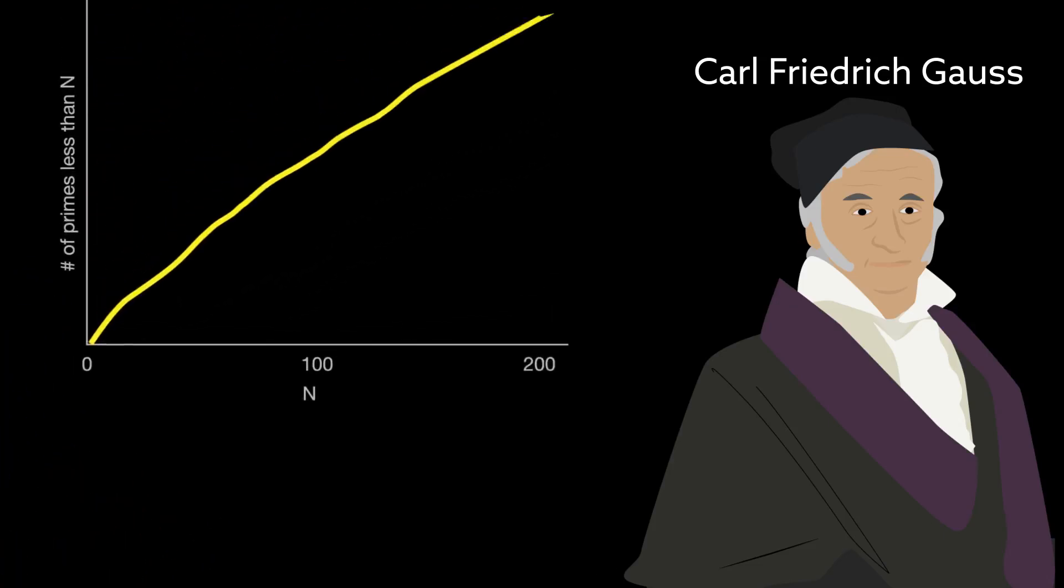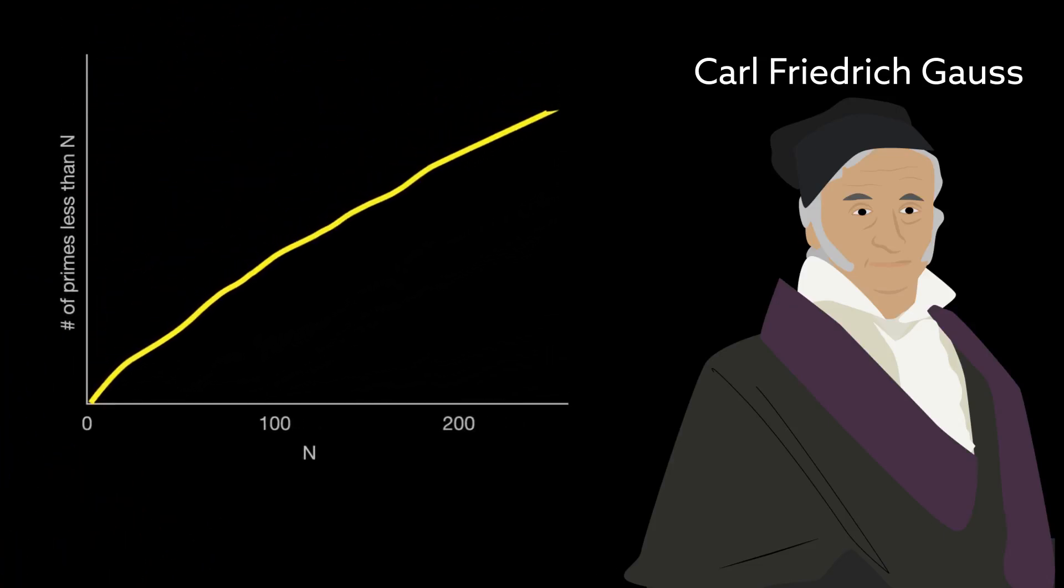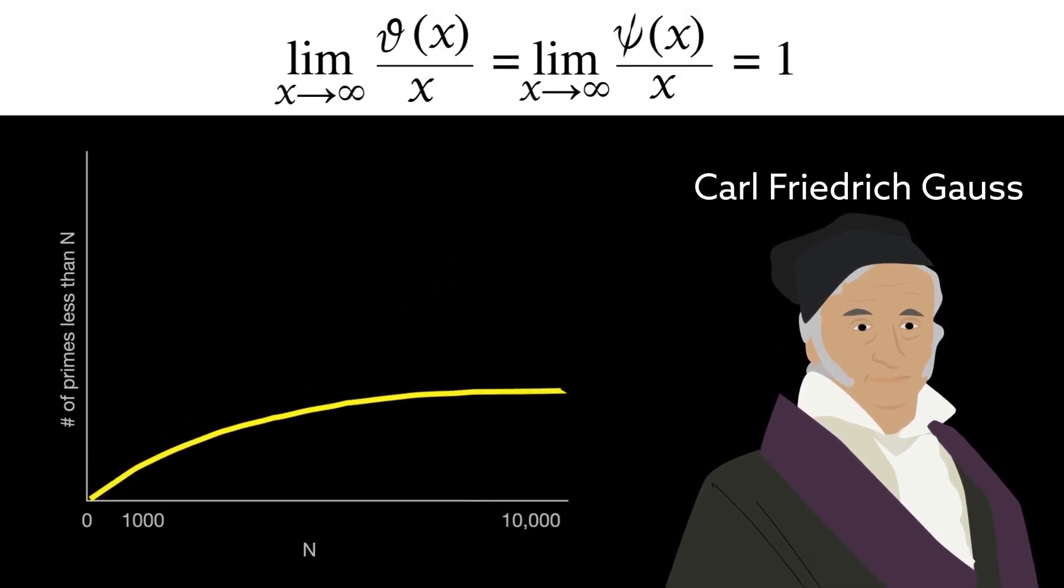He noticed that the rate at which prime numbers stack up as you tiptoe down the number line declines steadily as the number of digits increases, an observation that was later proved. This means that primes become increasingly rare the farther down the line you go.